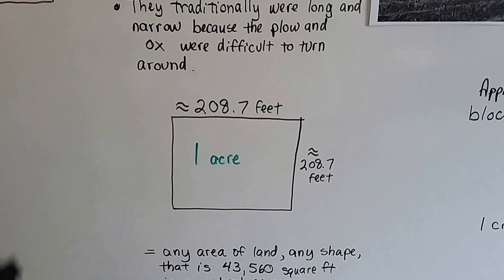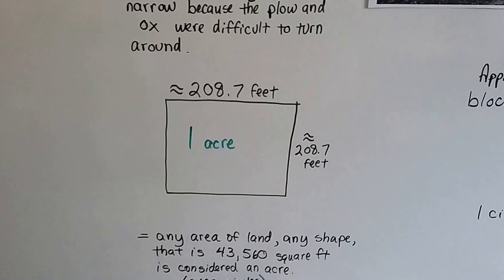So an acre is approximately 208.7 feet by 208.7 feet. That's one acre.